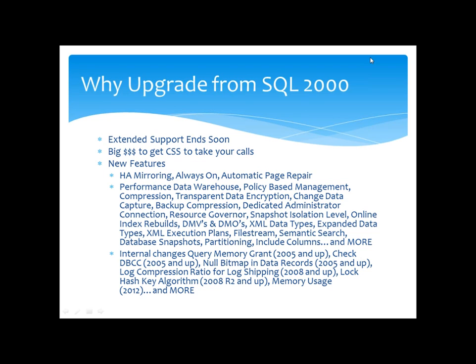If you get false deadlocks — whenever you insert or update a row, SQL Server performs a hash operation on that row. The algorithm used from SQL 7.0 all the way up until SQL 2008 was replaced in SQL 2008 R2 with a new lock hash key algorithm. This made it 100 million times less likely that you'd get a collision on different rows. If you had very similar rows being inserted into the same table, they could lock against one another and cause a false deadlock. That was alleviated in 2008 R2 and is also present in 2012, but any version prior to 2008 R2 does not have it.